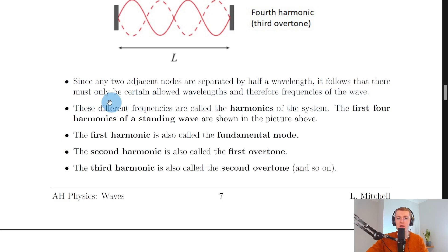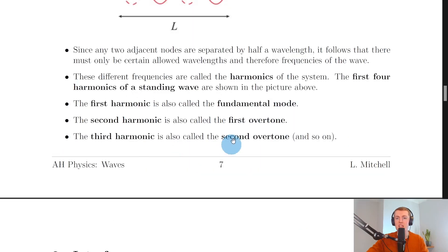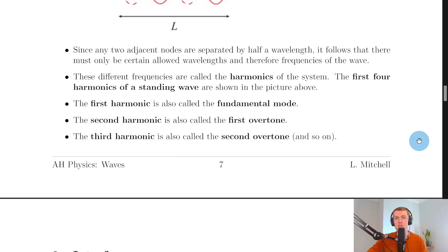Since any two adjacent nodes are separated by half a wavelength, there are only certain allowed wavelengths and therefore frequencies — these are called the harmonics of the system. The first harmonic is also called the fundamental mode, the second harmonic is the first overtone, and the third harmonic is the second overtone, and so on. If you play musical instruments, you may have heard the word harmonics before. Thanks for watching — give the video a like, subscribe to the channel, and I'll see you in the next one.